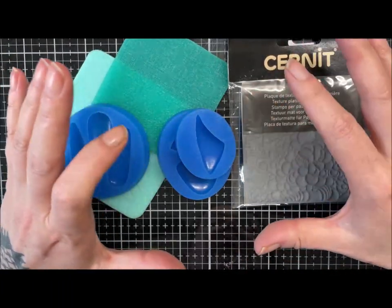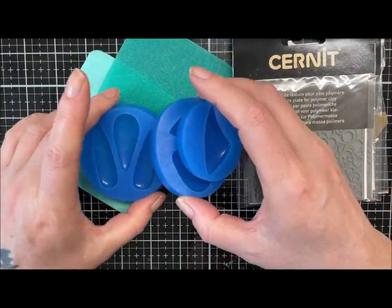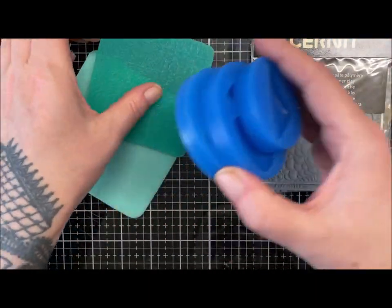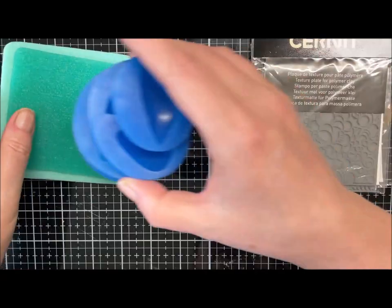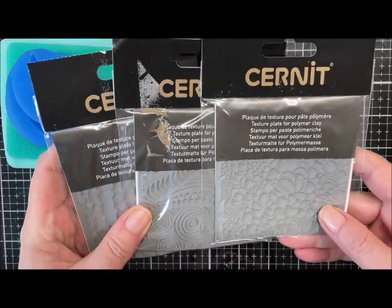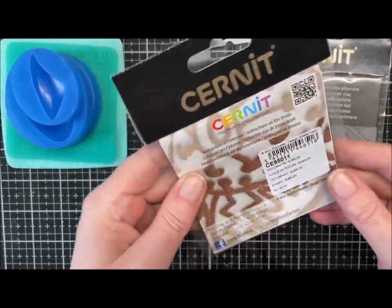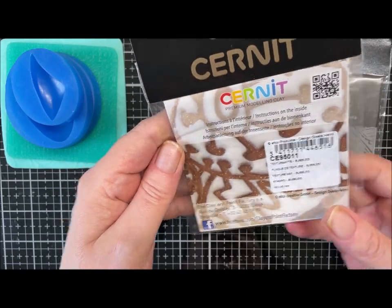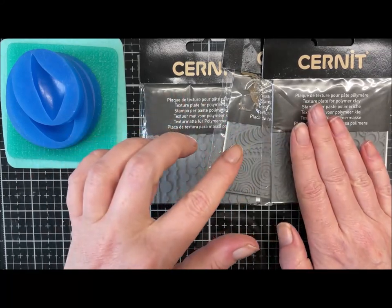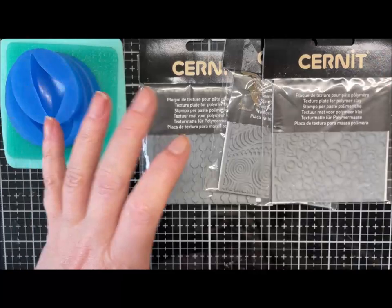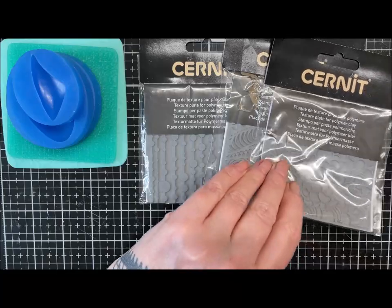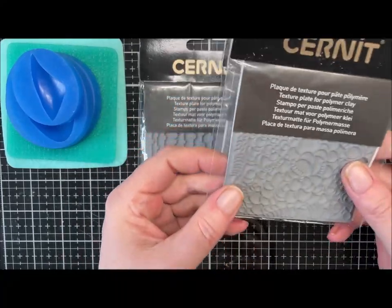Hi guys, just a quick textures and molds haul for you this morning. I'll just pop these to one side. I've been after some of these Cernit textures for quite a while, so I've bought a few. I got them from Clay Ground, I will leave a link. It's a UK lady who sells all things Cernit, and they were all £6.25.